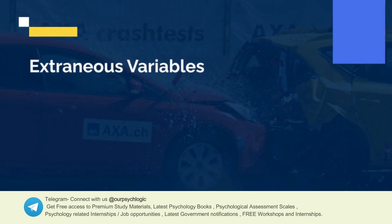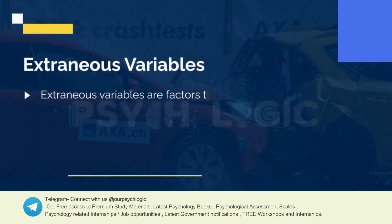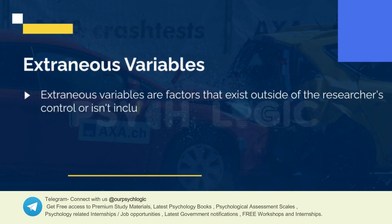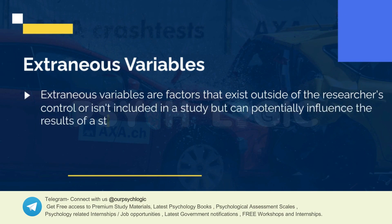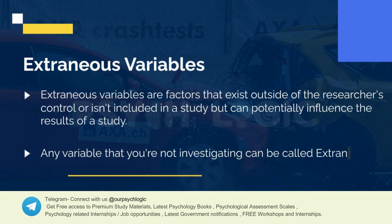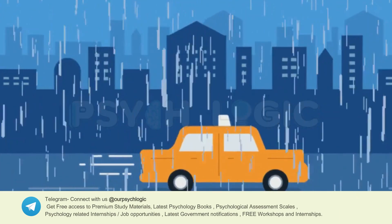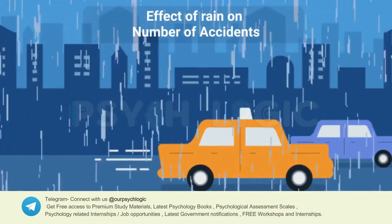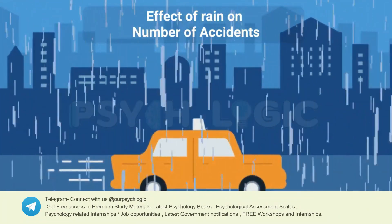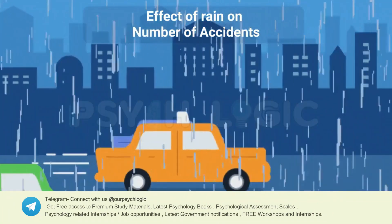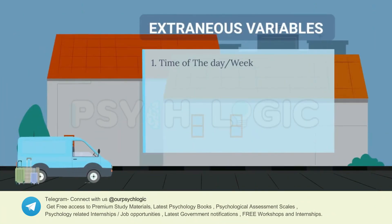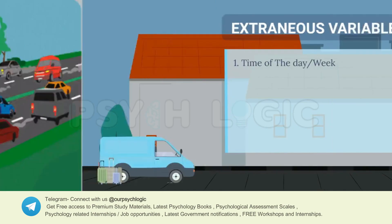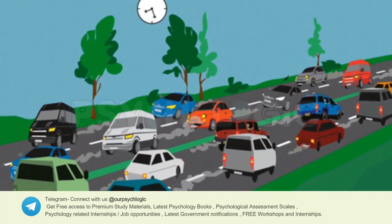Next come extraneous variables. Extraneous variables are factors that exist outside of the researcher's control but potentially influence the results of the study. They can definitely affect your study, and therefore there is a possibility that you don't reach accurate conclusions. Taking the same example — rain as independent variable and number of accidents as dependent variable — extraneous variables could be: what time of the day? Because accidents might be more common during rush hour, regardless of rain.